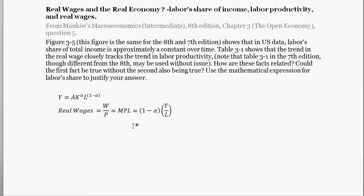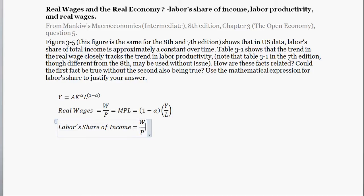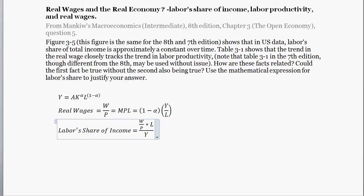Next up, let's do labor share of income. Labor share of income equals real wages — the amount of money being paid to people — times how many people there are, divided by total output Y. Income is Y; that's how much money there is to spend, and it has to go somewhere — either capital or labor in our simple economy. Labor share is all the money going to labor: the real wage times all labor, divided by total output.